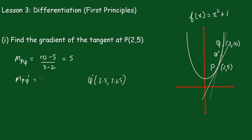Now the gradient PQ' is 7.25 - 5 over 2.5 - 2, which comes out to 4.5. The gradient is getting shallower.